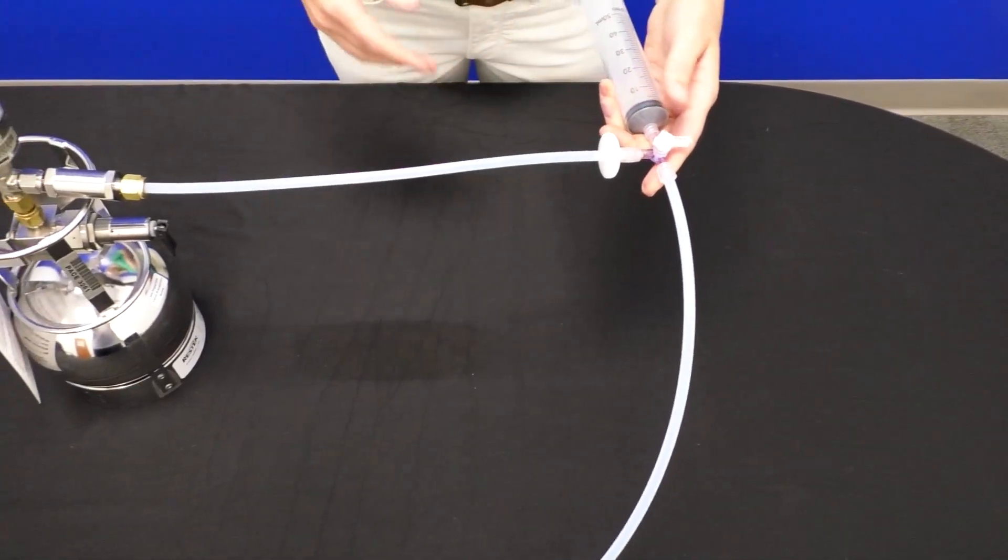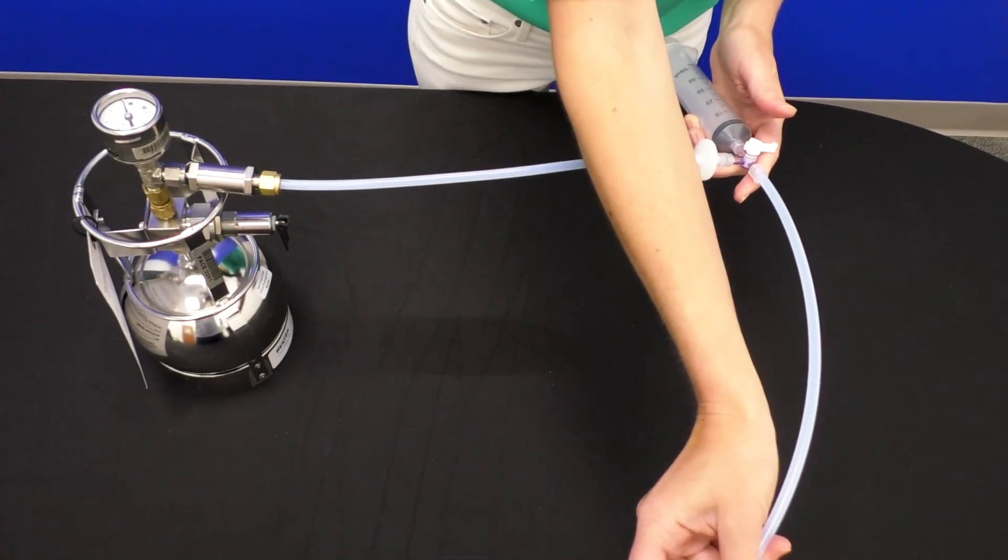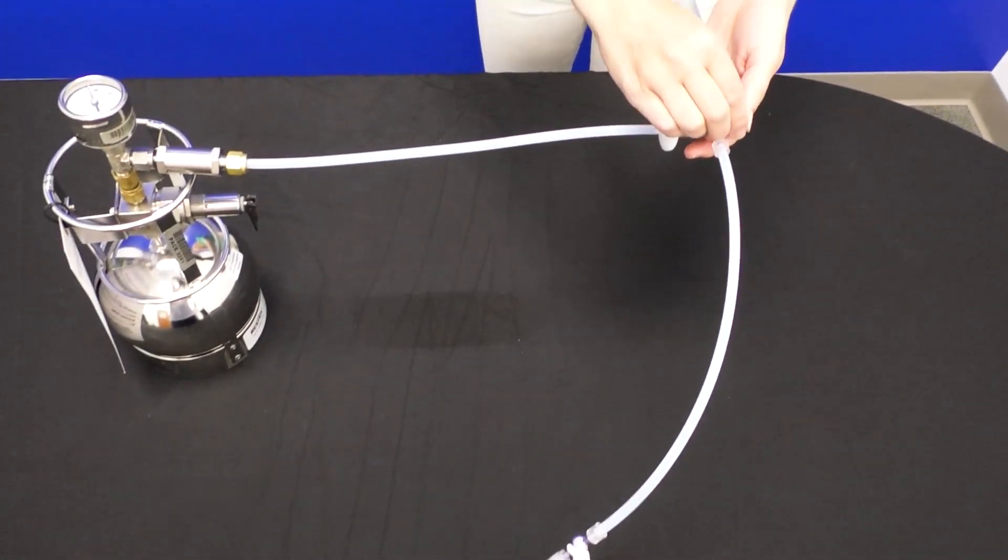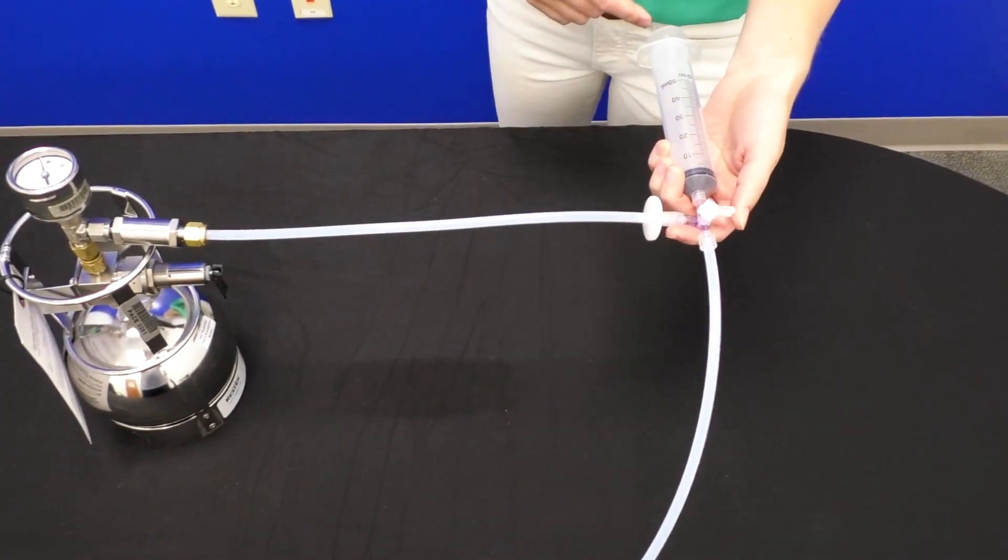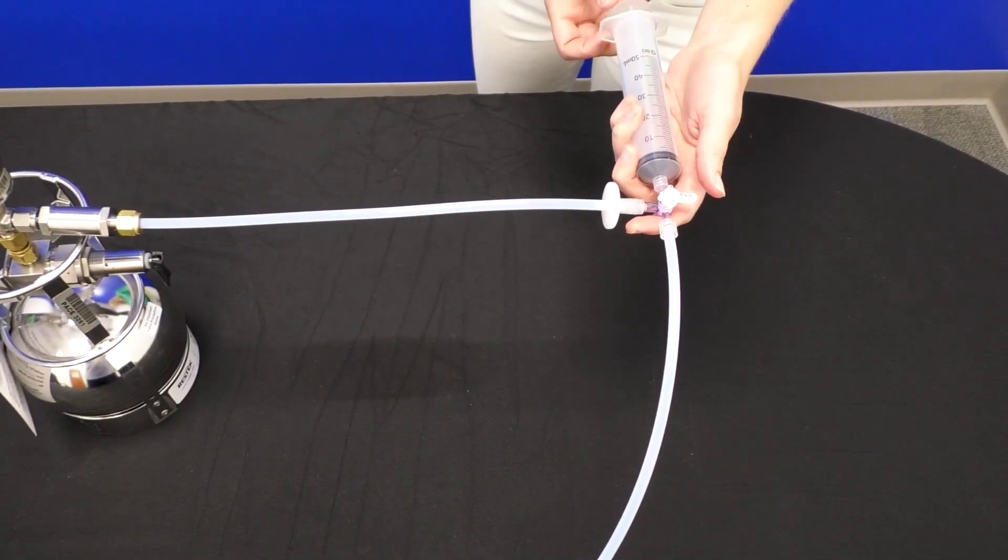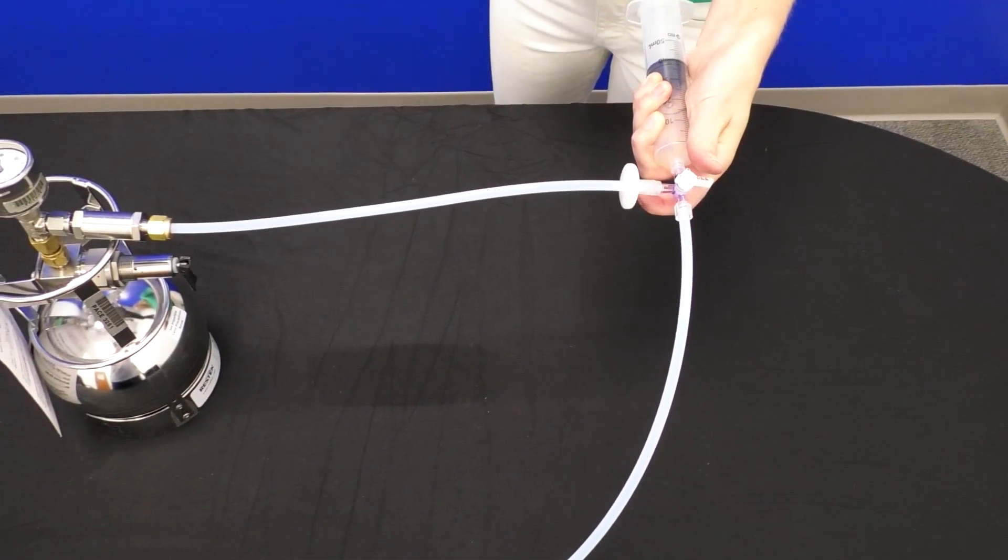And now when you are ready to leak check your system, here we don't have a sampling point so I'm going to close the two-way valve. You'll make sure that the off valve is set to the opposite the T, so all directions are open. And then you will draw a vacuum on the system with your syringe.